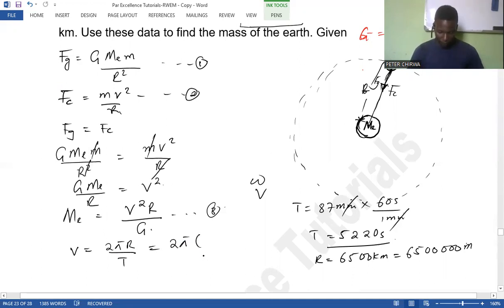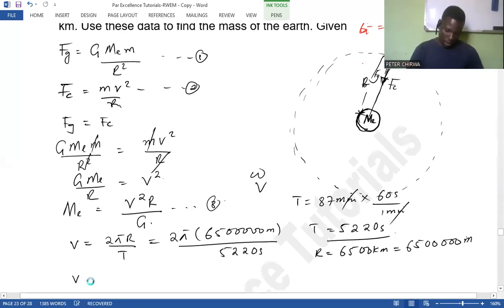So we know that velocity is 2 pi R over period. So this one is just going to be 2 pi into the radius 6,500 times 10 to the power 3 meters, divided by the period that is 5,220 seconds. So our velocity is going to be 7,823.9 meter per second.